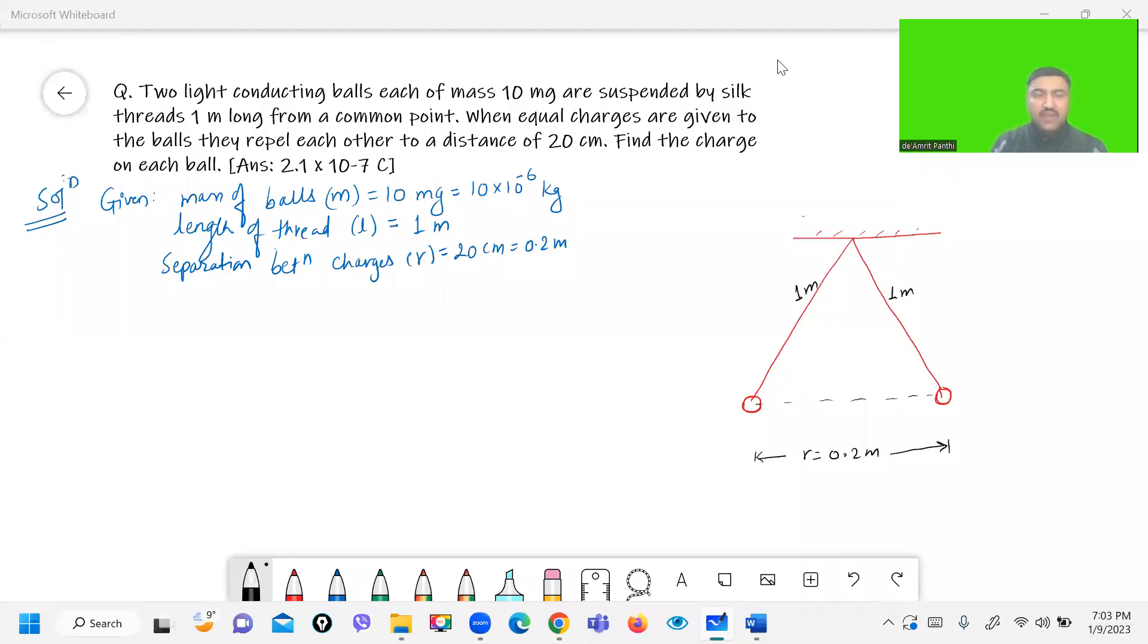Here the question is: two light conducting balls each of mass 10 mg are suspended by silk threads 1 meter long from a common point. When equal charges are given to the balls, they repel each other to a distance of 20 cm and we have to find the charge on each ball.